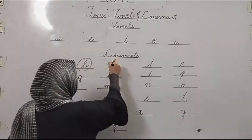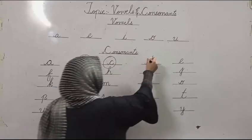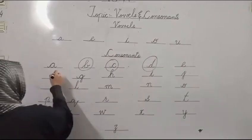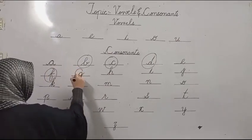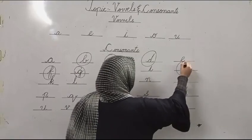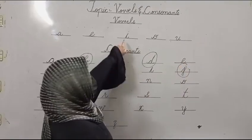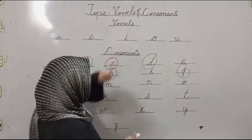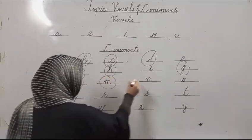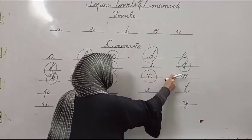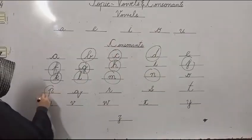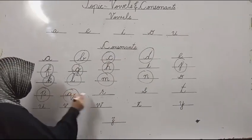Now let's circle the consonants. We'll circle B, C, D, F, G, H, J, K, L, M, N, and then P, Q, R.